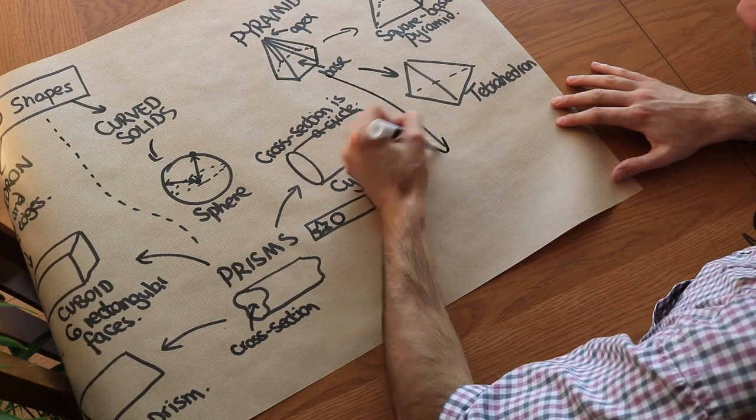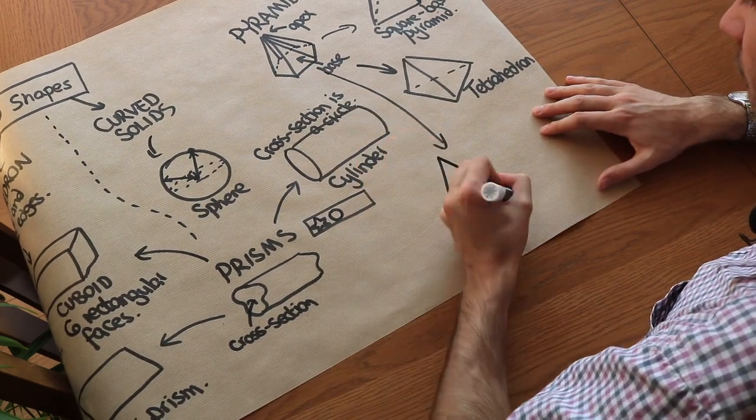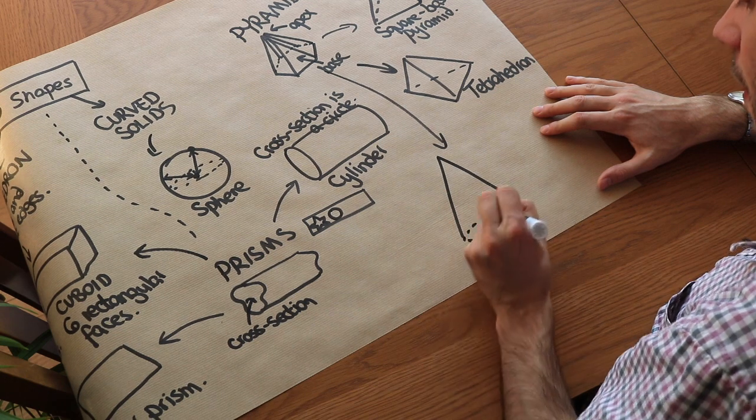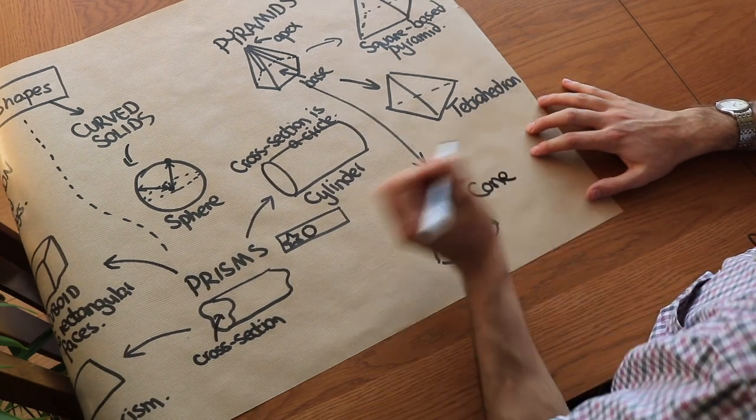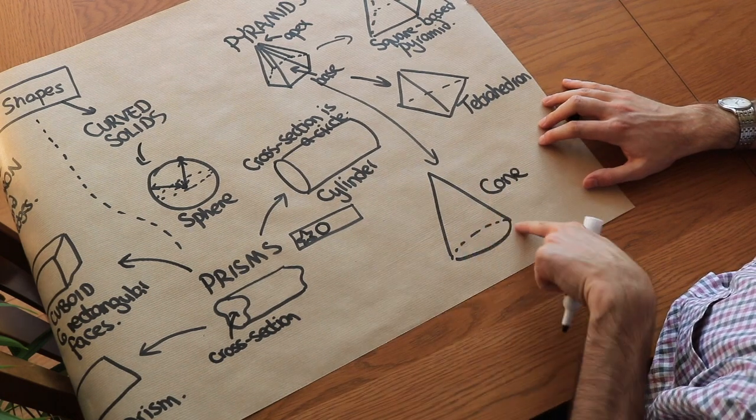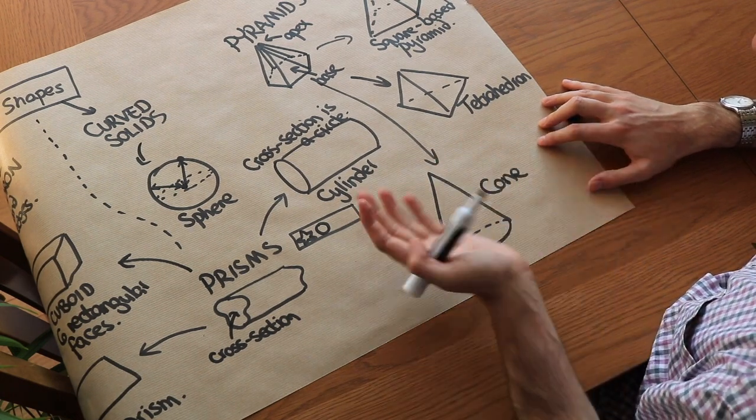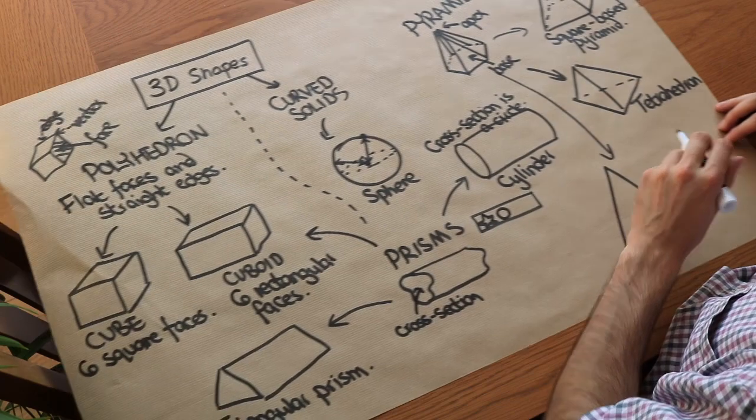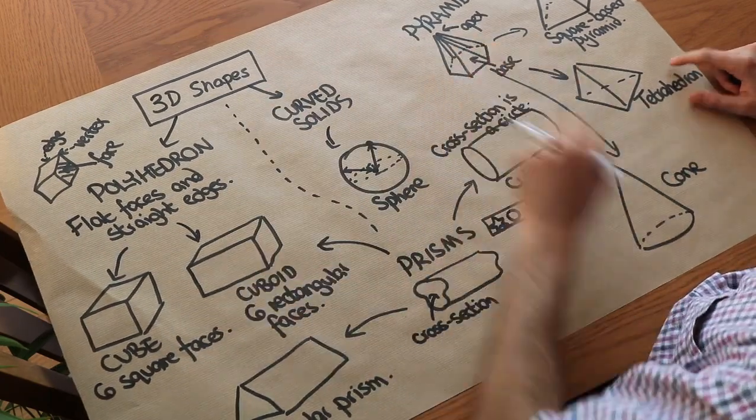And finally there's one curved pyramid. You could have a circular base like this and that is known as a cone. So a cone is basically a circular base pyramid but we don't call it that. We call it a cone. And that is all the main shapes you need to know.